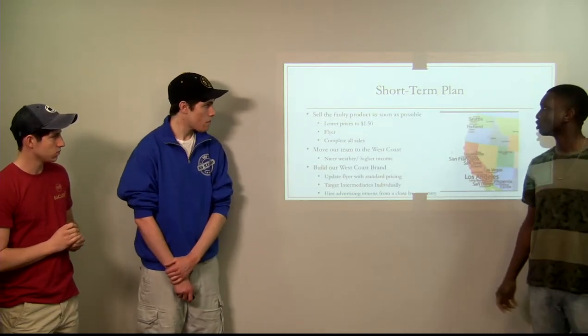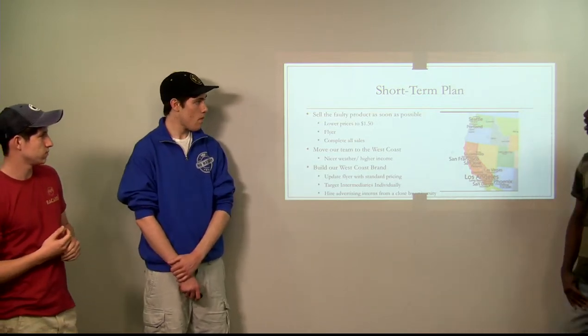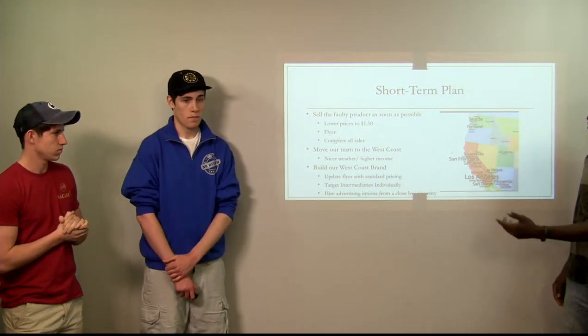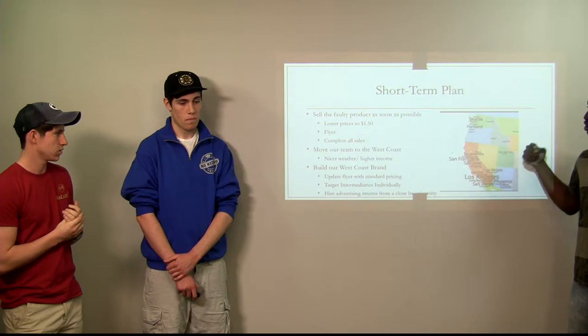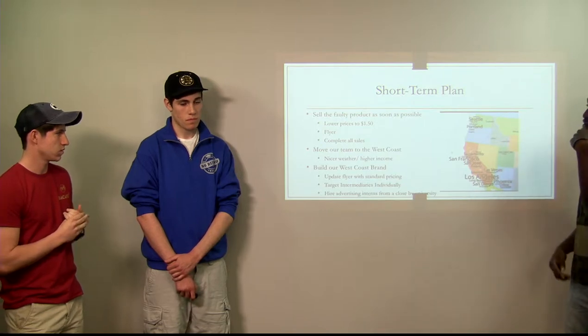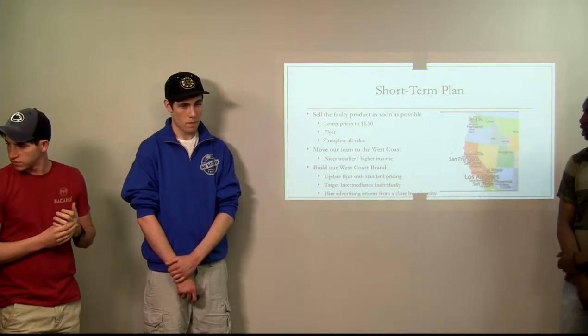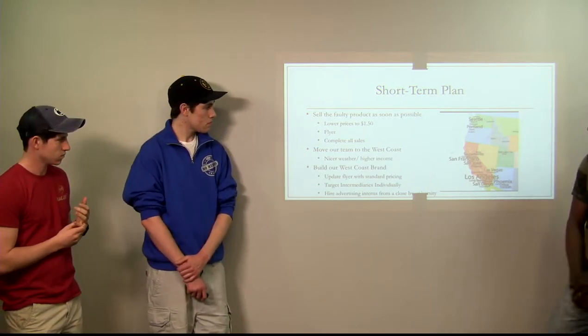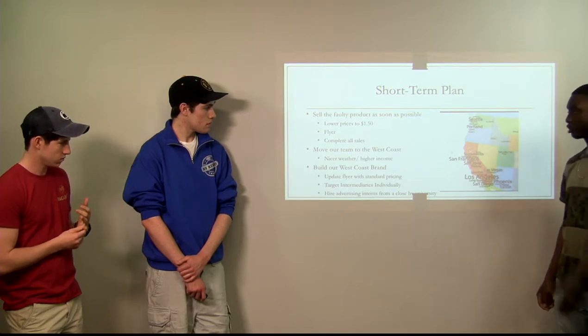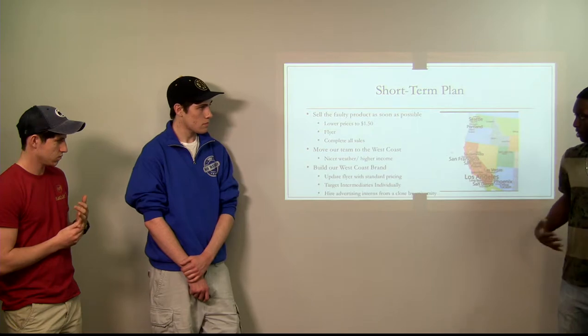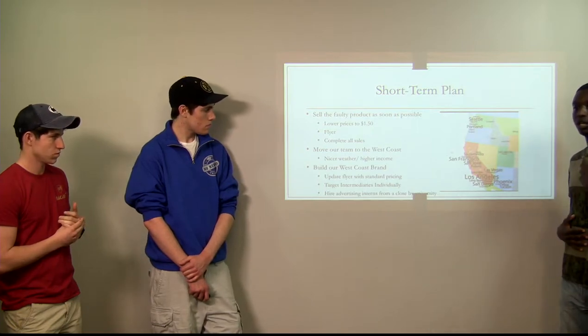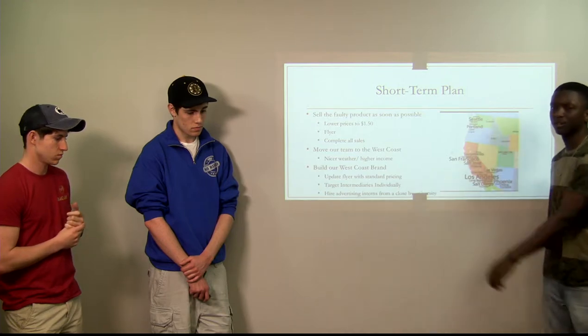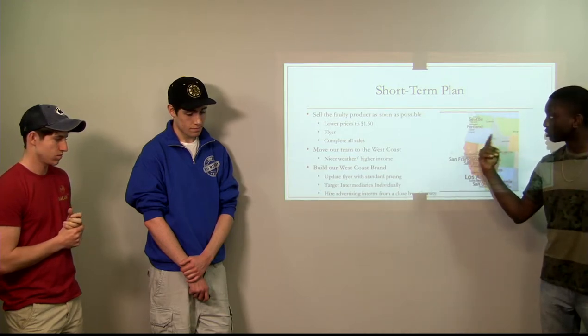Next slide is the short-term plan. We want to sell the faulty product as soon as possible. As I previously said, from $2 we want to lower the price to $1.50. We want to distribute flyers and sell all of our inventory. We want to move our team to the west coast, and it will be better for the employees working there. That would give them more motivation to come to work with the nice weather and higher income.